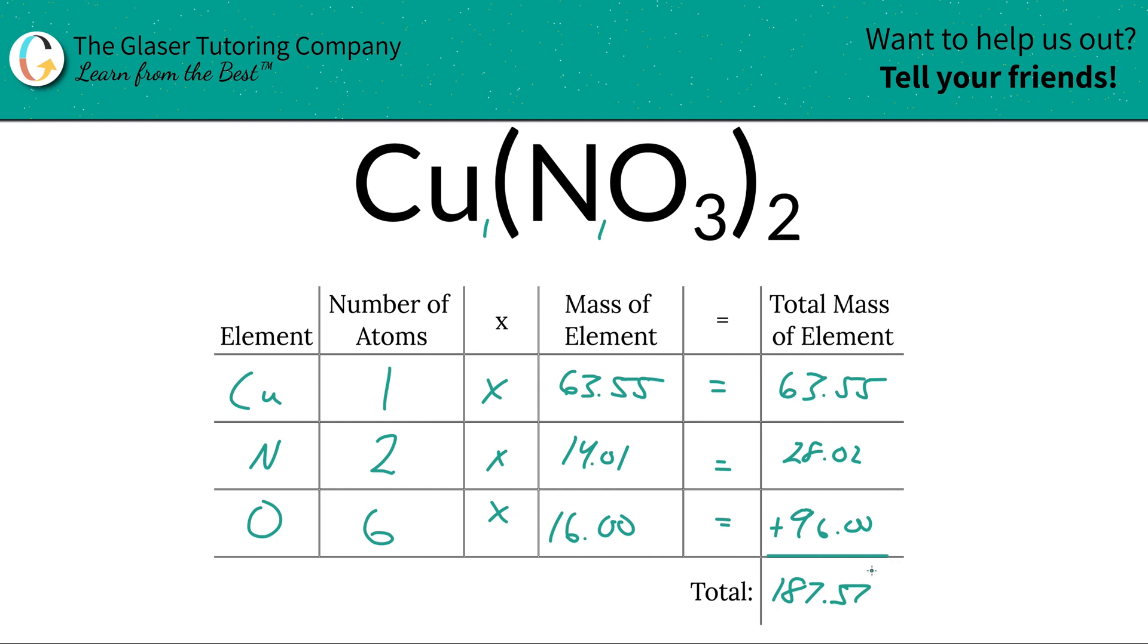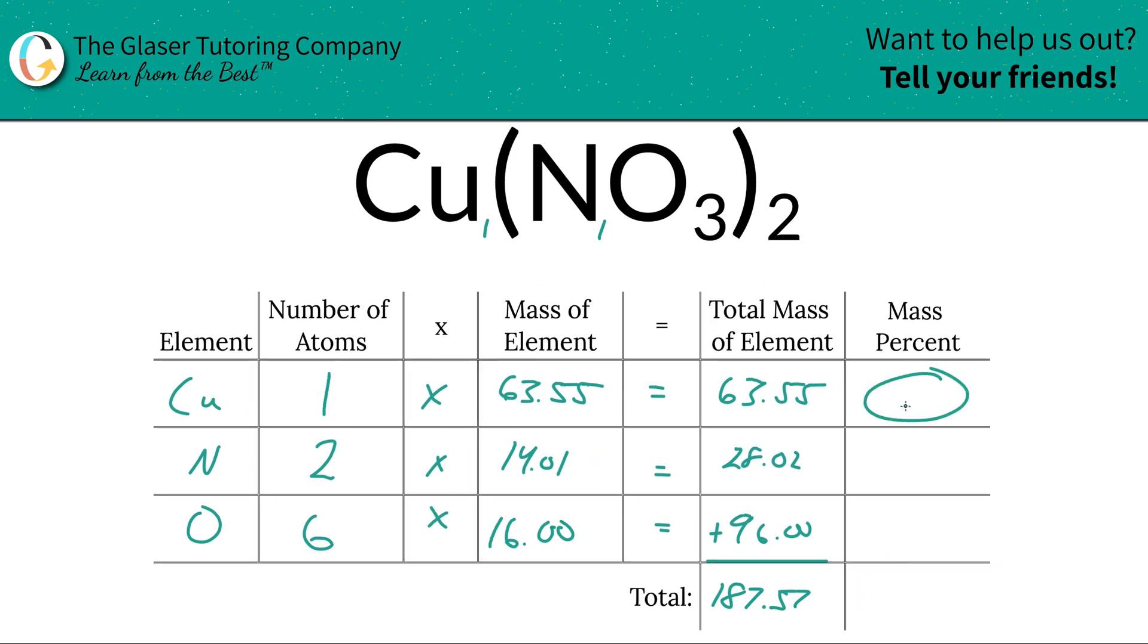So now that we know the total mass of the compound, we can find the percents of each particular element. Watch, I'm going to add a column to the table. So to find the mass percent of copper, we're going to take the total mass of the copper, 63.55, and then divide it by the total mass of the entire compound, 187.57. The units are irrelevant because they're going to cancel. So that's why we don't have to worry about the units. And this is simple percent, part over whole times 100. Easy peasy.